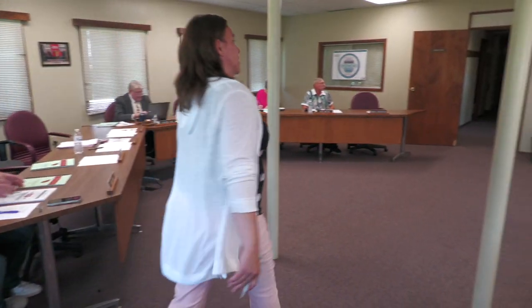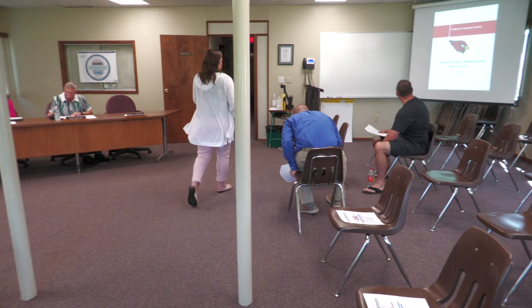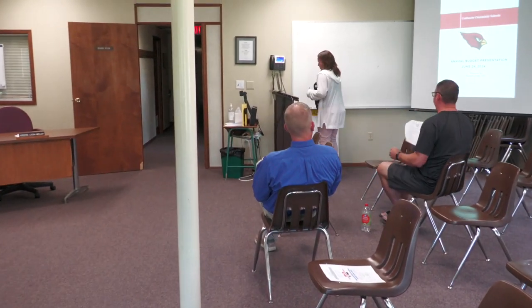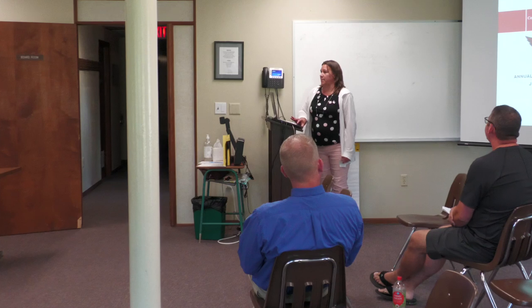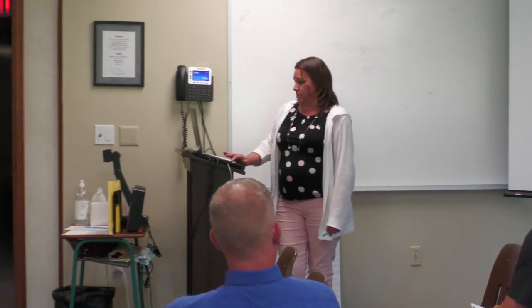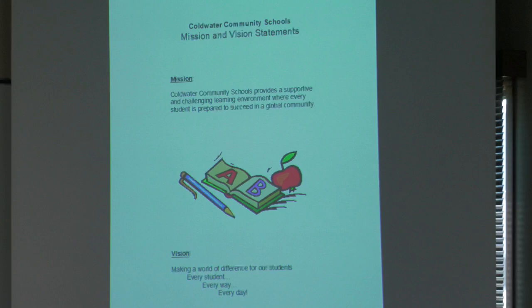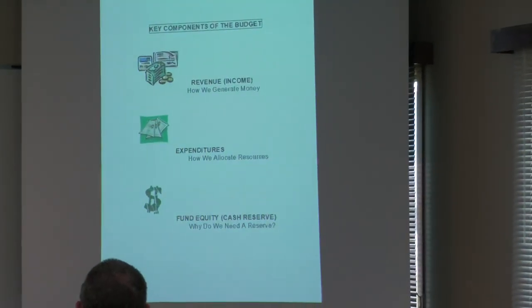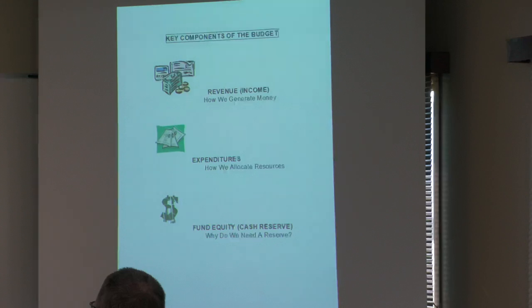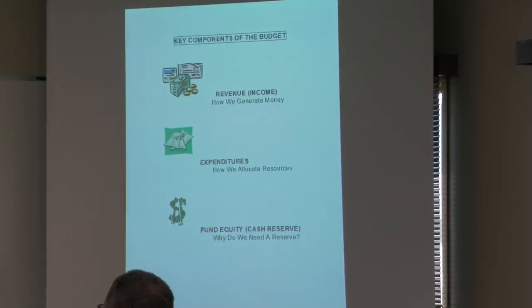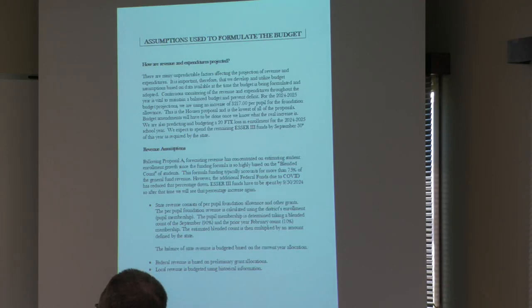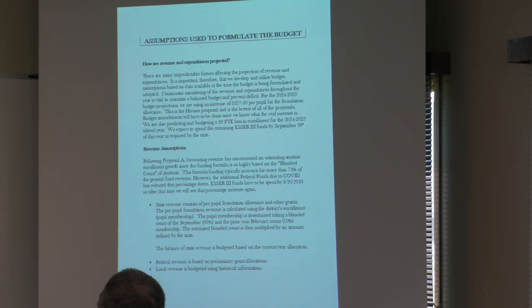We'll get started with the budget hearing. I've used the same template that Terry has used in the past, so we're just going to go through this briefly. We have the list of board members, the mission and vision statement, and then the key components of the budget: revenue, expenditures, and fund equity. This sheet is an in-depth explanation of what I used to calculate the 24-25 budget.